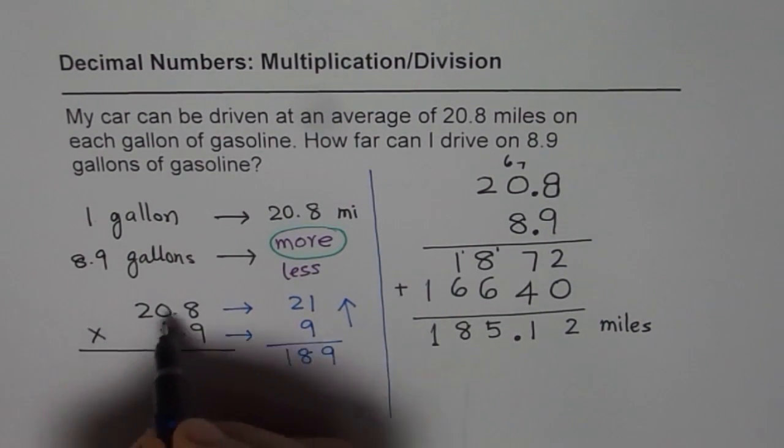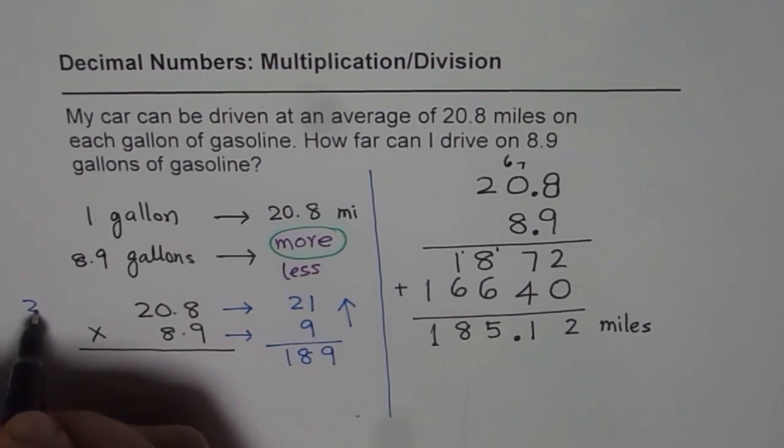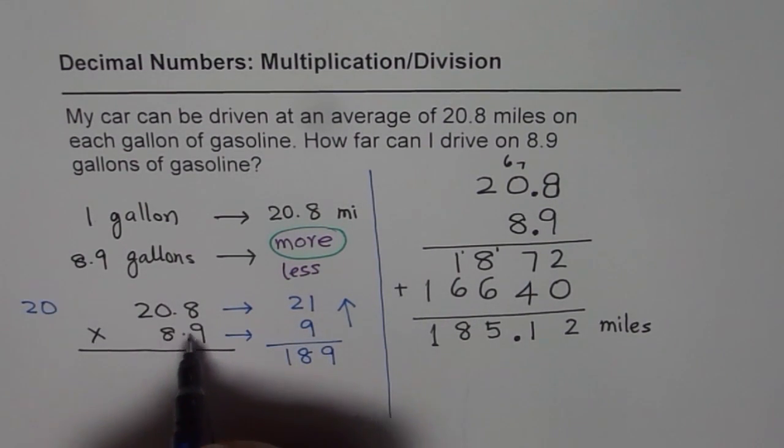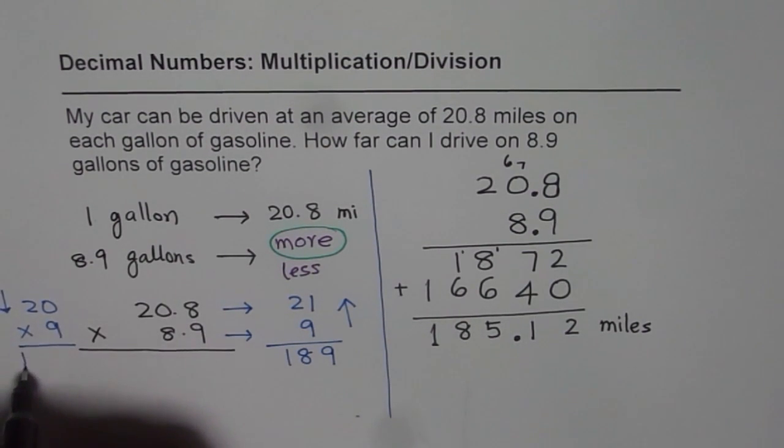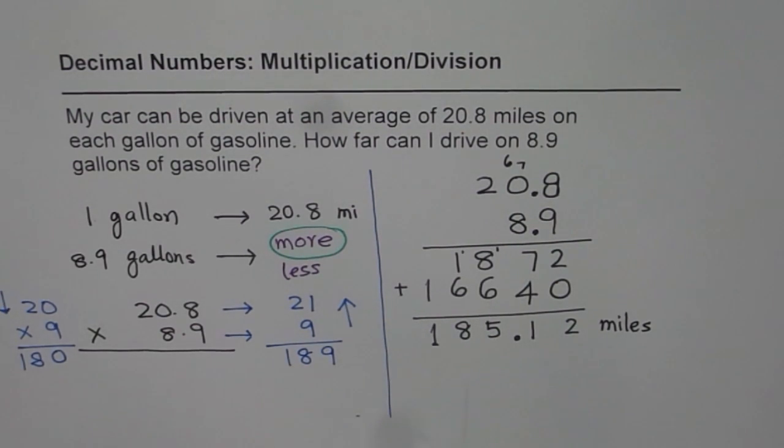Let us round them downwards. 20 and we will make it 9, for example. We know we rounded this lower, it should have been 21. So it gives us 180 as our answer. So our answer is between these two values. 185.12 miles seems to be a very good match.